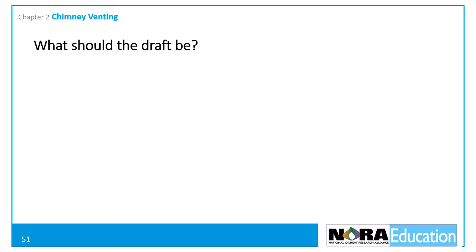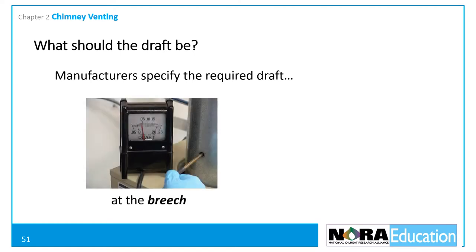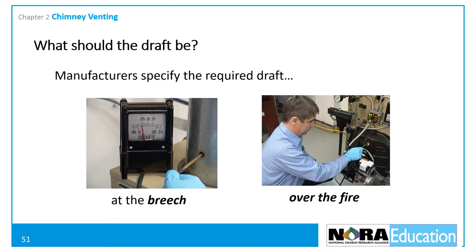How much draft does an oil heat appliance need? The answer is, it varies. Oil heat equipment manufacturers specify the amount of draft required in two places. The first is at the breach, which is in a straight piece of flue pipe on the appliance side of, and at least six inches from, the draft regulator. The second is over the fire, in the flame observation door just above the combustion chamber. Over-fire draft is normally about negative 0.02 inches of water column.